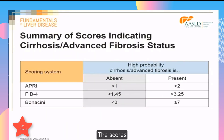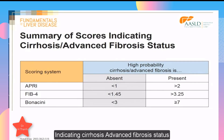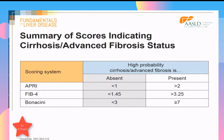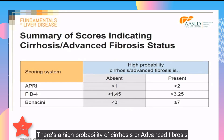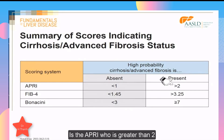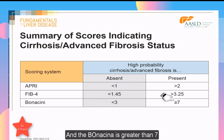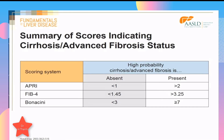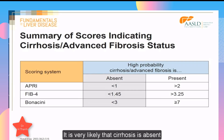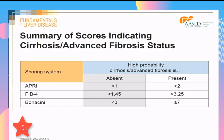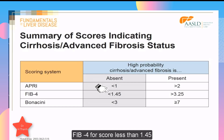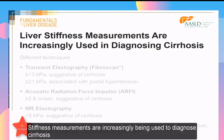To summarize the scores indicating cirrhosis or advanced fibrosis: there is a high probability of cirrhosis if the APRI score is greater than 2, the FIB-4 score is greater than 3.25, and the Bonaccini score is greater than 7. On the other hand, cirrhosis is very likely absent if the APRI score is less than 1, the FIB-4 score is less than 1.45, and the Bonaccini score is less than 3.